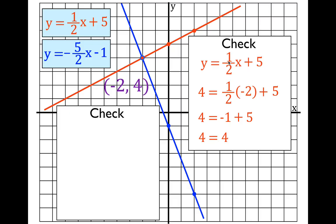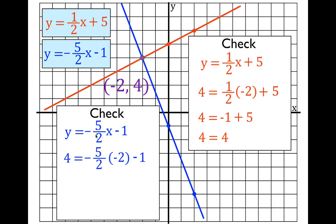Now I'm also going to check the other equation — the blue line. I'm going to use this equation and once again substitute the same point's x and y values. I get four equals minus five-halves times minus two, minus one. This is a minus and a minus, so it's going to be a positive value.